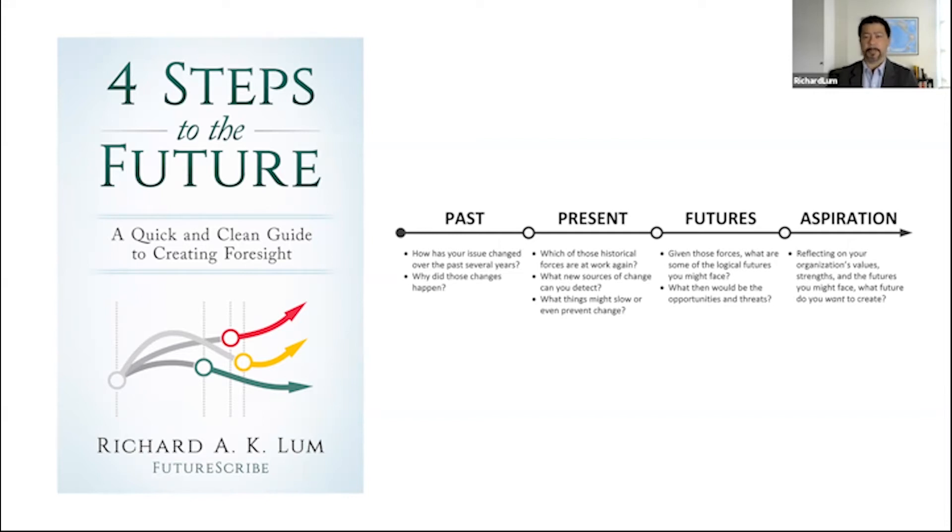And then step four, which is aspiration, takes all of that stuff and says, okay, now that we've gone through all of this and all of these trends, emerging issues, cycles, all of these big disruptive changes we possibly talked about, after having looked at all of that stuff, now with that information, with a little bit of that inspiration, what do we want to do? What do we want to achieve? So step four in aspirations, when we're talking about goals and objectives, when we're talking about the future that we want to shape and create.